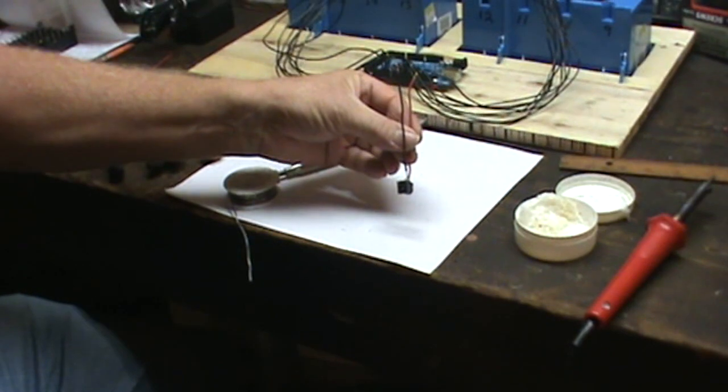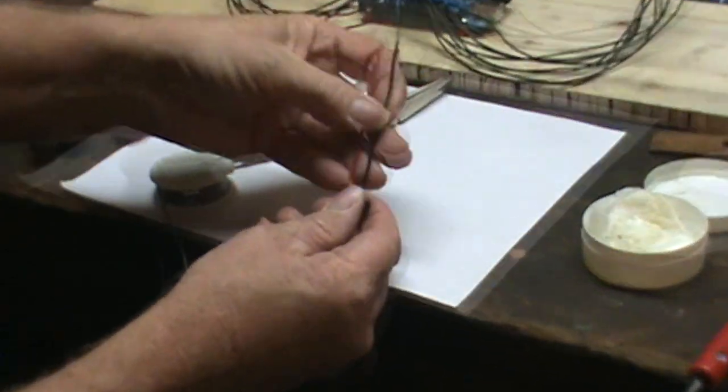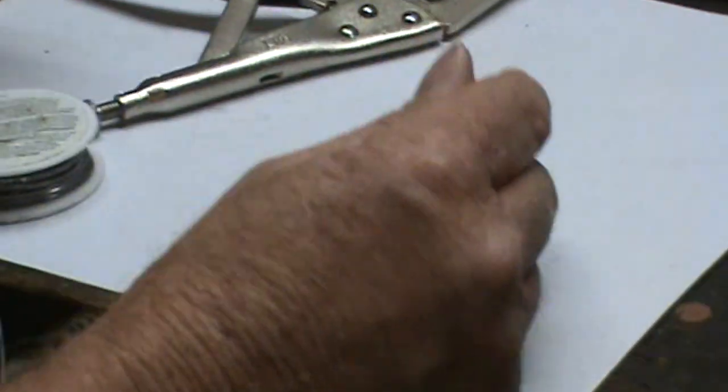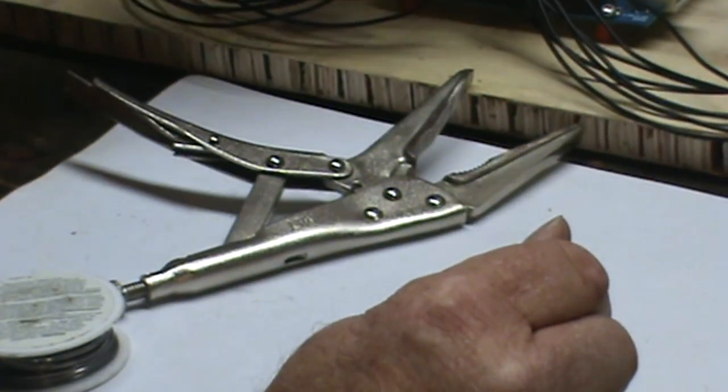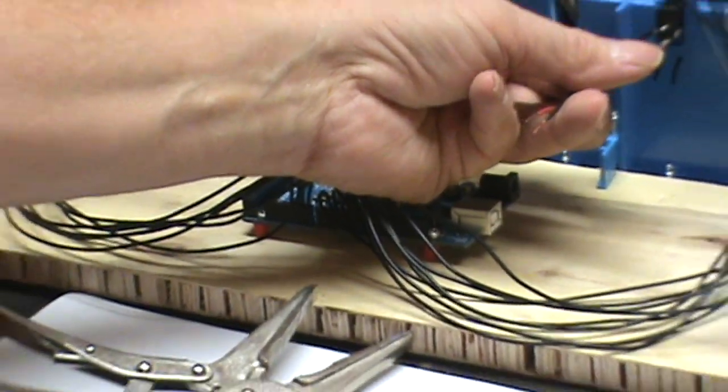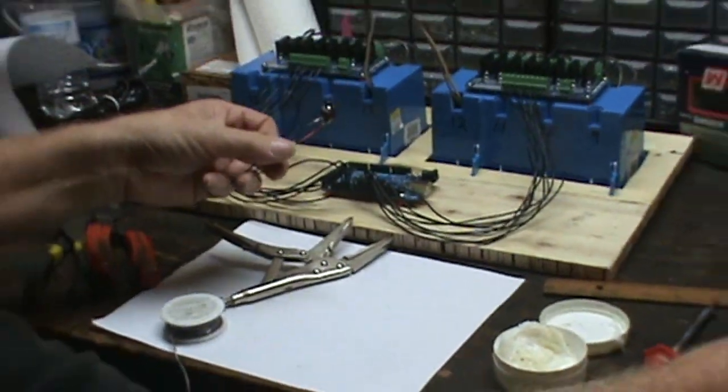So now our socket is here with our power wires. This we're going to hot glue into one of the openings up here in the board. Any of them that you didn't close, it's just a good place to put it that's out of the way.